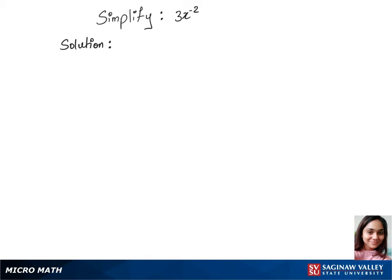To simplify this question: 3x to the power minus 2, we'll use the negative exponents rule. We can write this as 3 times 1 over x squared, using the rule that x to the power minus 2 equals 1 over x squared. This gives us 3 over x squared. That's our answer.